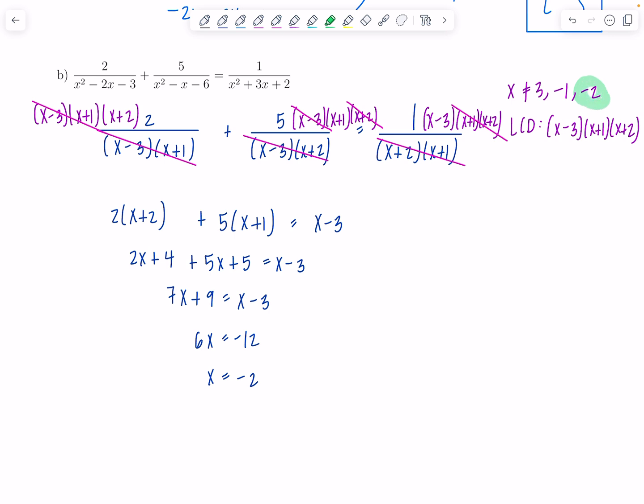No. Look. x can't equal negative 2. That was one of our restrictions. So, what do we do? Well, we have no solution to report. And you just tell them that's what happened. Don't feel badly. There's no solution.